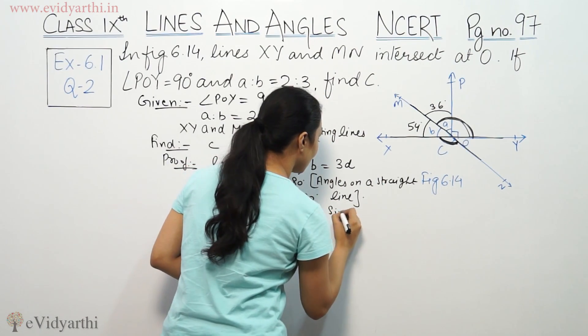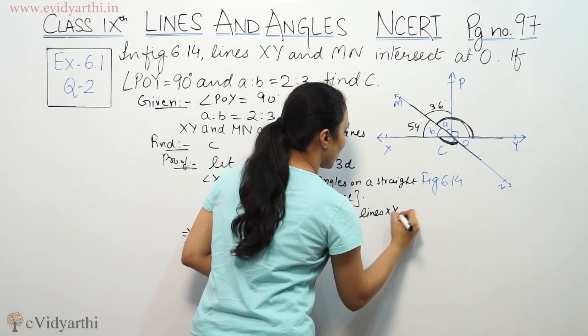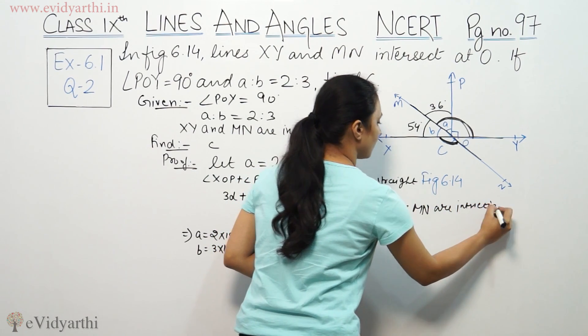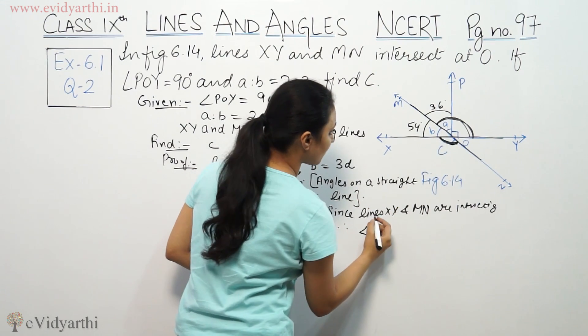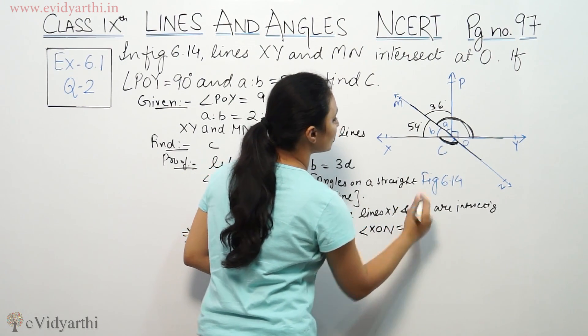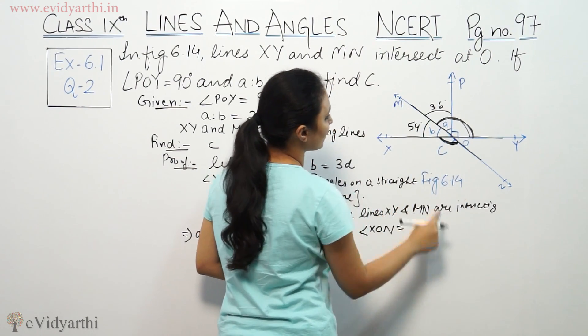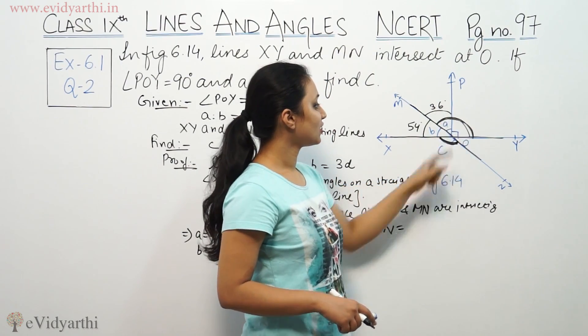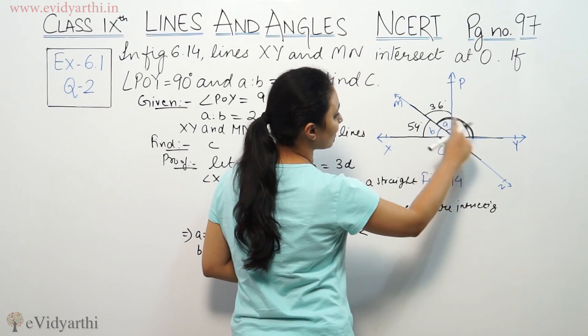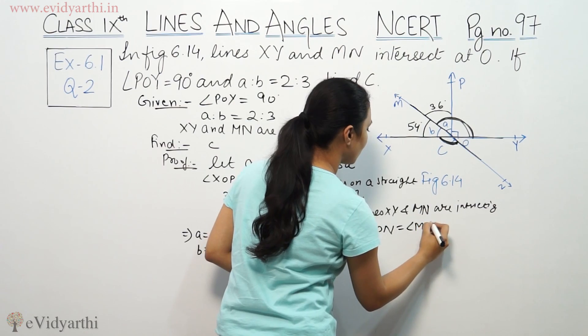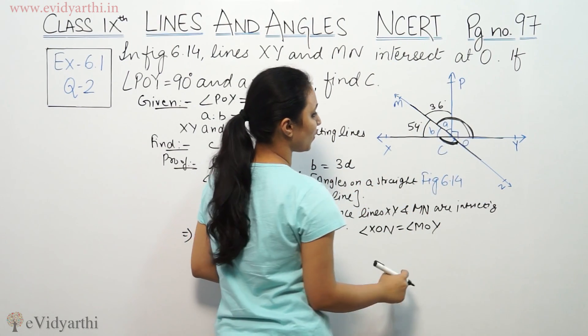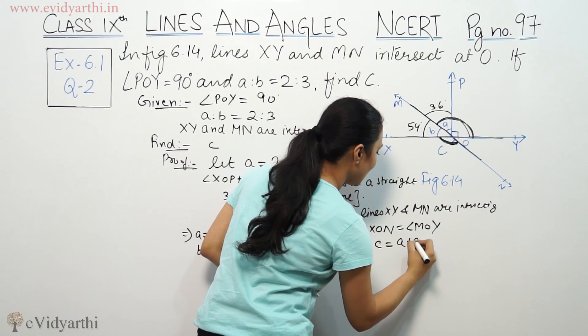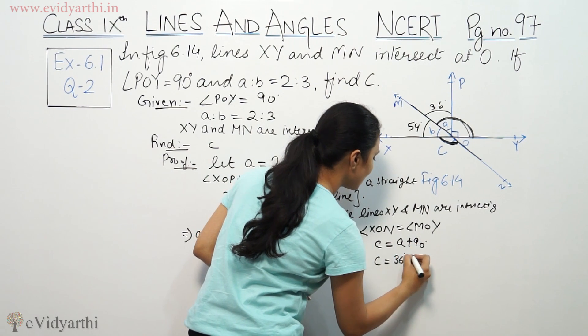Since lines XY and MN are intersecting, therefore angle XON equals angle MOY. XON is c and MOY is a plus 90.